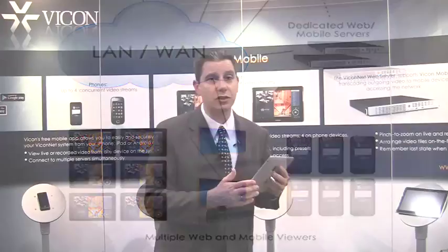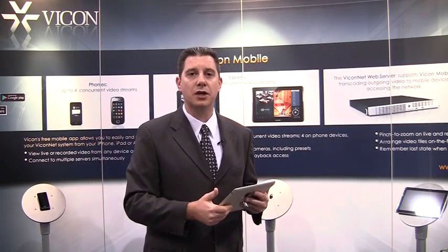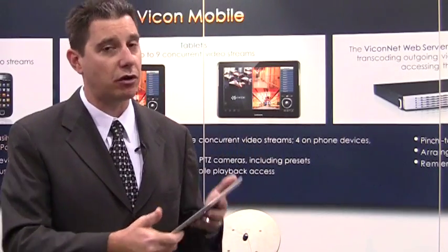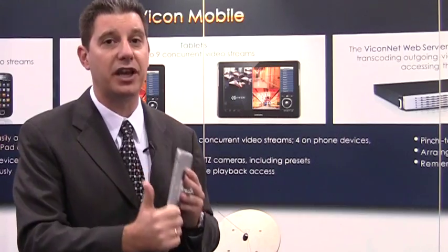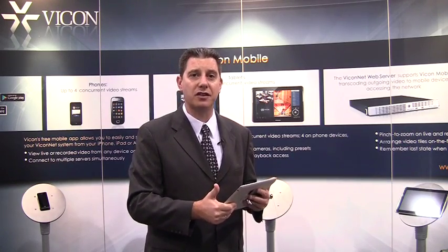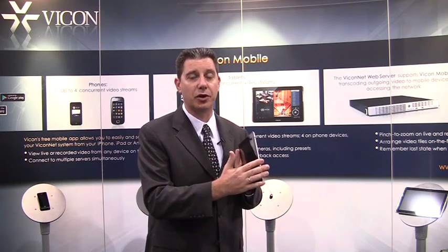If you're an existing Viconet user and you want to update your system to support the mobile solution, all you need to do is update the web server on your system. The mobile solution requires you to run Viconet version 6.6 Service Pack 2 — make sure you have the right version or the mobile devices will not be able to run. If you're a new user, we can help you design a system to support these mobile devices. In any case, all cameras on that system will be supported through the mobile applications.